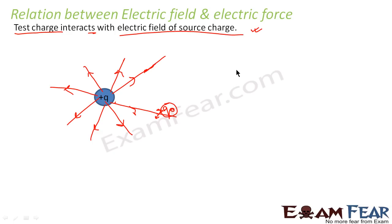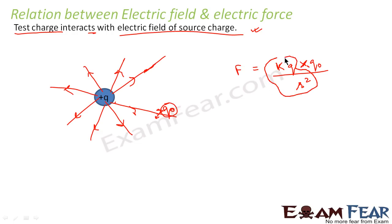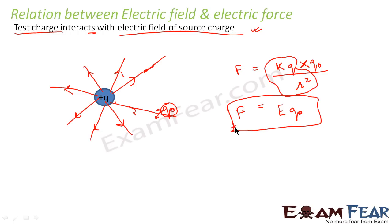From our previous lessons on Coulomb's law, we saw that electric force F equals k times capital Q times q naught divided by r squared. We can now define electric field E such that electrostatic force equals the electric field of the source charge multiplied by the test charge: F = E × q naught. So this is the relationship between electric force and electric field, and electric field is generally denoted by E.